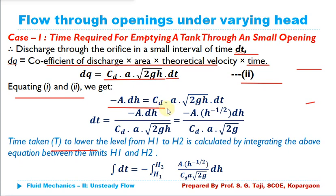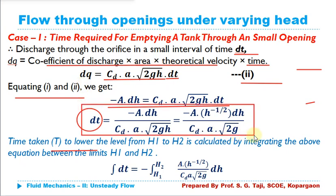We want to compute the time equation, so we take dt to one side. The expression for dt is: dt = -A·dH / (CD × a × √(2gH)). Simplifying, since H^(1/2) in the denominator becomes H^(-1/2) in the numerator: dt = -A × H^(-1/2) × dH / (CD × a × √(2g)). Here DH is the height of liquid decreasing in the tank over the small time step dt.